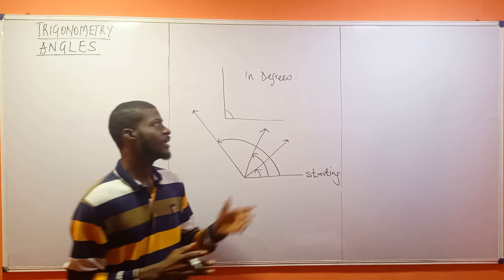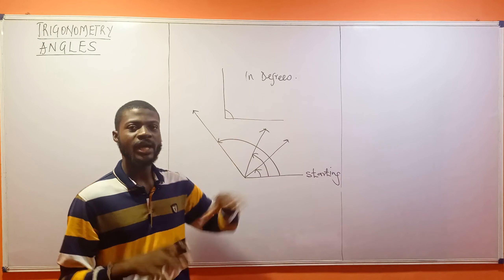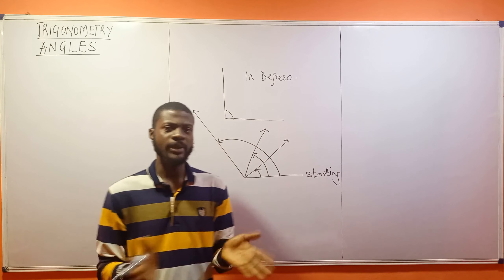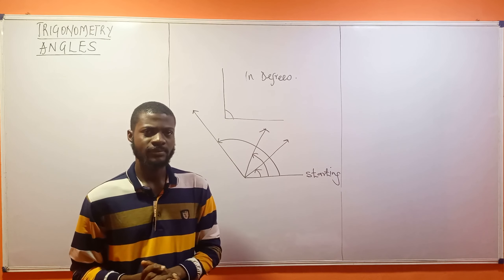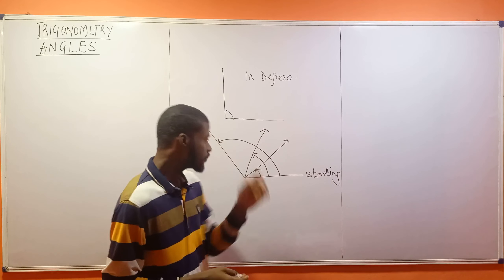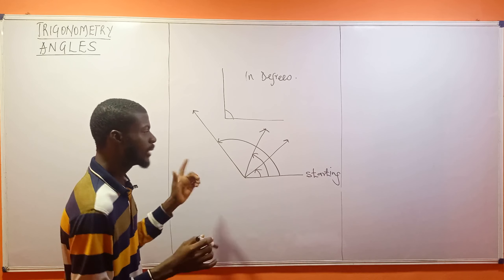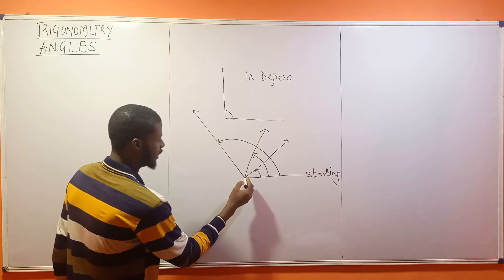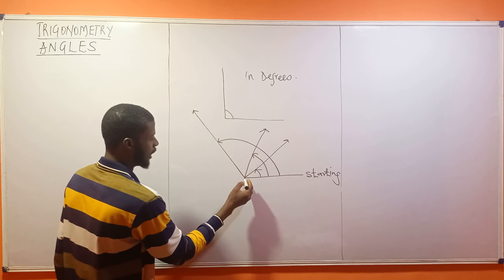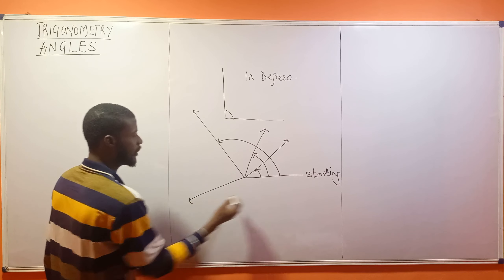That doesn't mean that degrees are the only way we measure angles. We can measure angles in radians. Now, what is a complete angle? Let me continue with that before I move into conversion. You can have another line this very way.